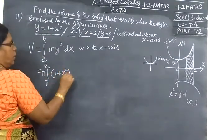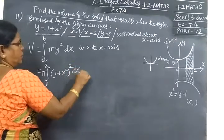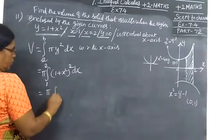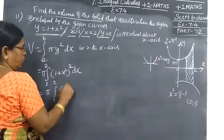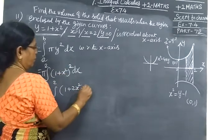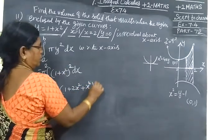We want π integral from 1 to 2 of (1 plus x²)² dx. Expanding: π integral of (1 + 2x² + x⁴) dx.